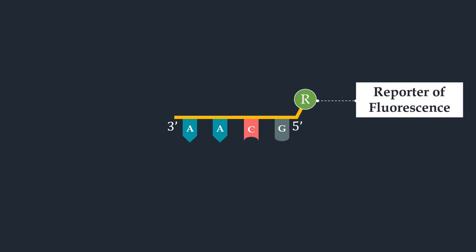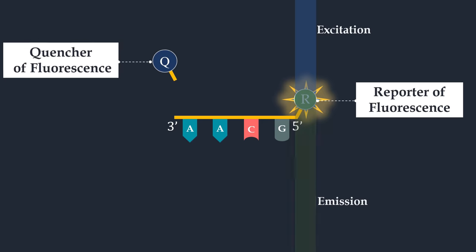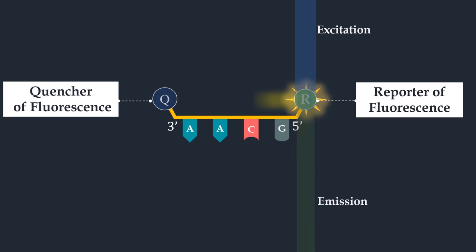The Taqman probe consists of a fluorophore covalently attached to the five-prime end of the oligonucleotide probe. The fluorescence is emitted by the fluorophore when it is excited by the cycler's light source. Also, this probe consists of a quencher at the three-prime end. The close proximity of the reporter to the quencher prevents detection of its fluorescence.